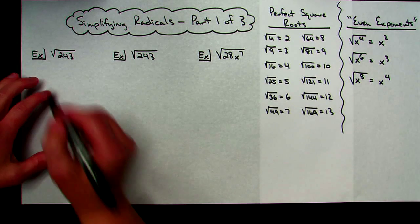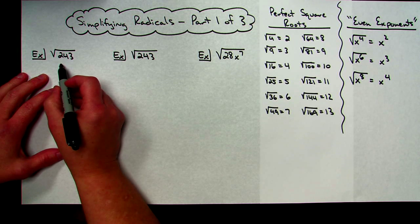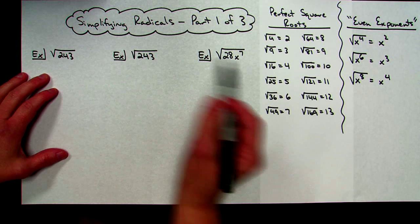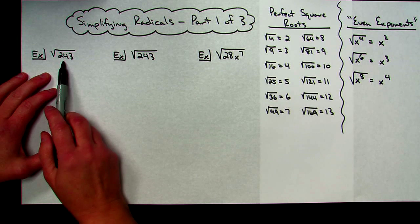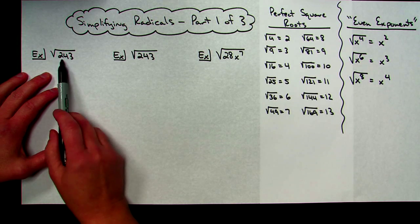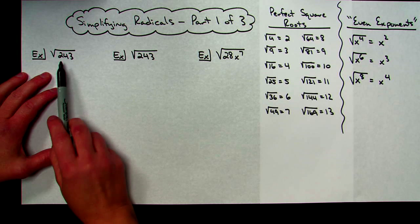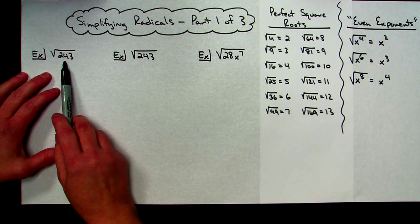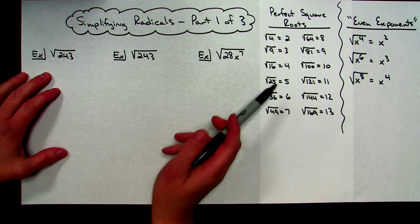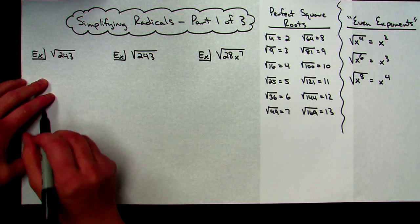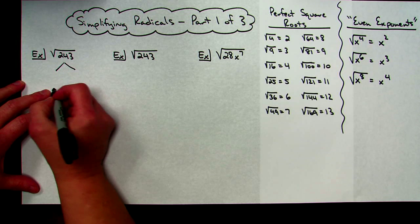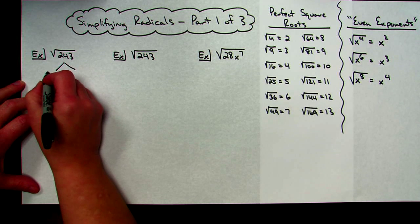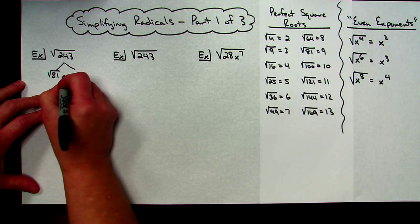So let's simplify this first example. I've got square root of 243. So what I'm going to do is I'm going to come over here and find out which one of these perfect square roots goes into 243. So I'm going to take 243 divided by 4, 243 divided by 9, 243 divided by 16. And I want to find the largest perfect square root that will go into 243. Turns out that 81 times 3 is 243.